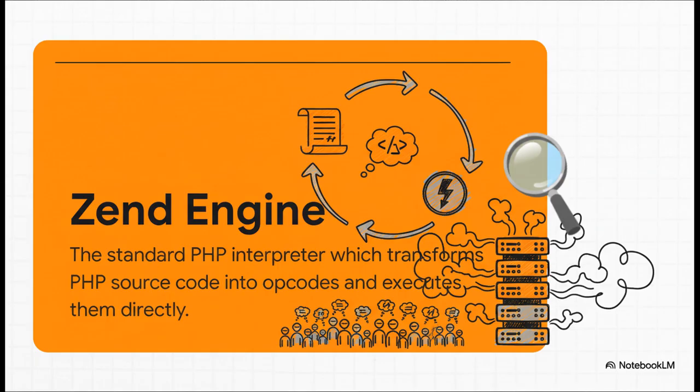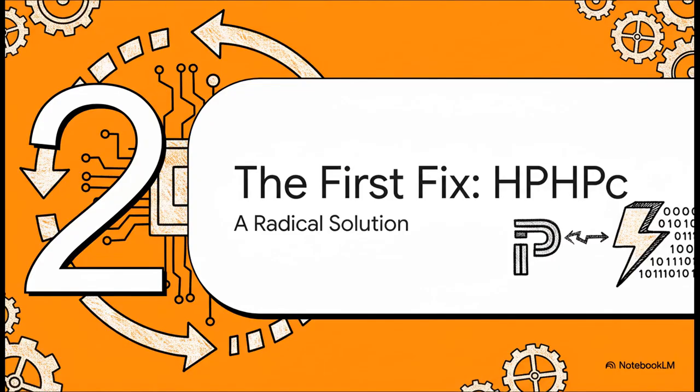Turning it into these things called opcodes, and then running them. It's super flexible, sure, but imagine doing that billions of times a day. At Facebook scale, that repetitive work was just burning through an insane amount of server power.